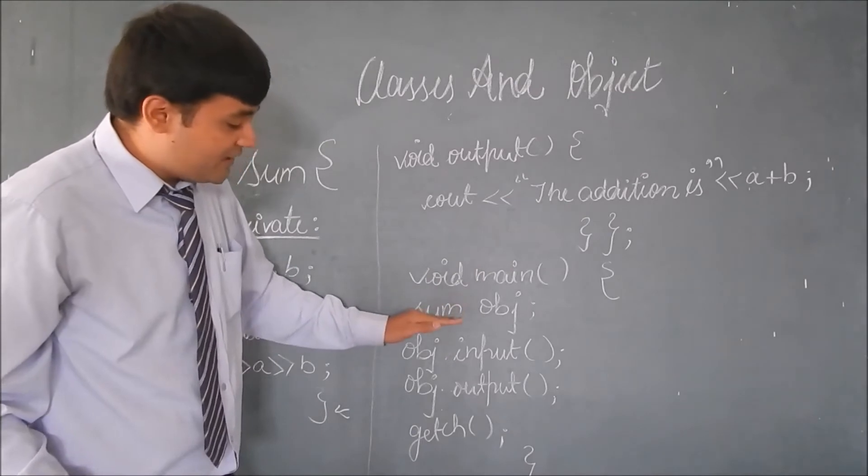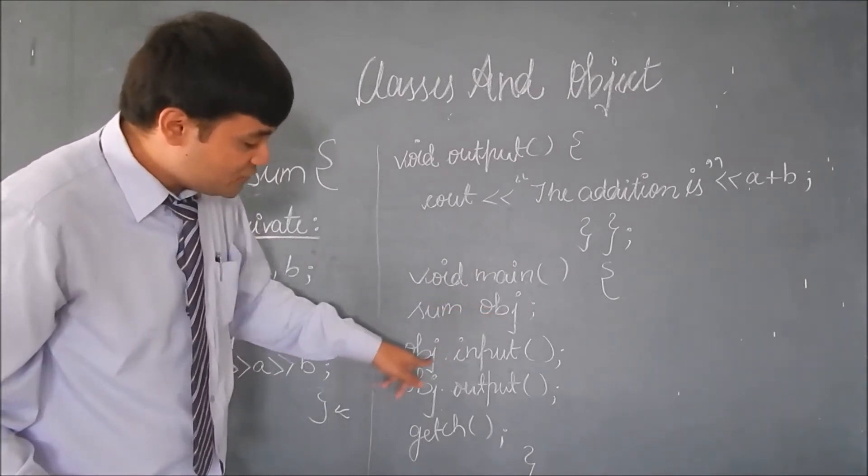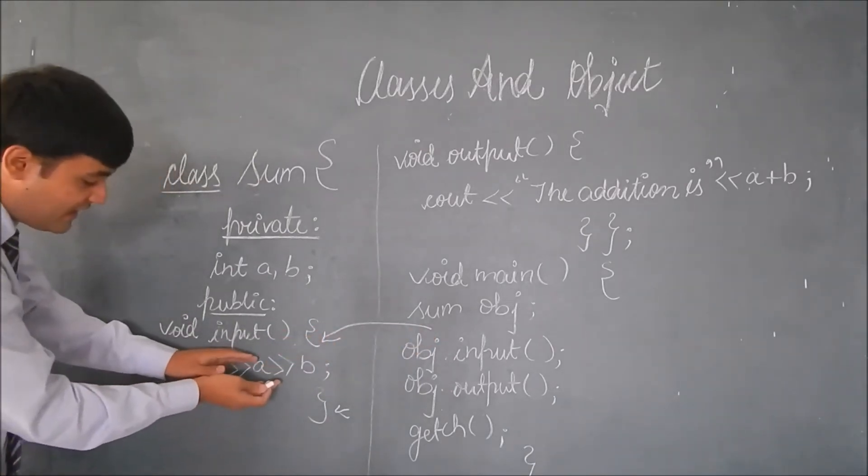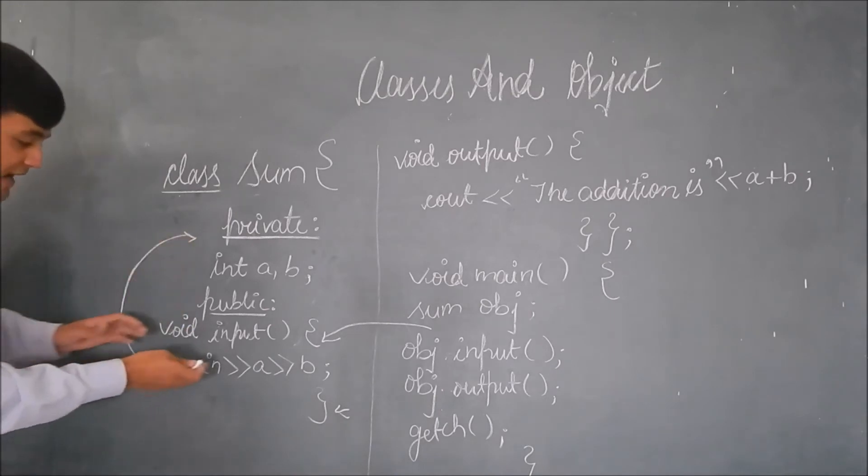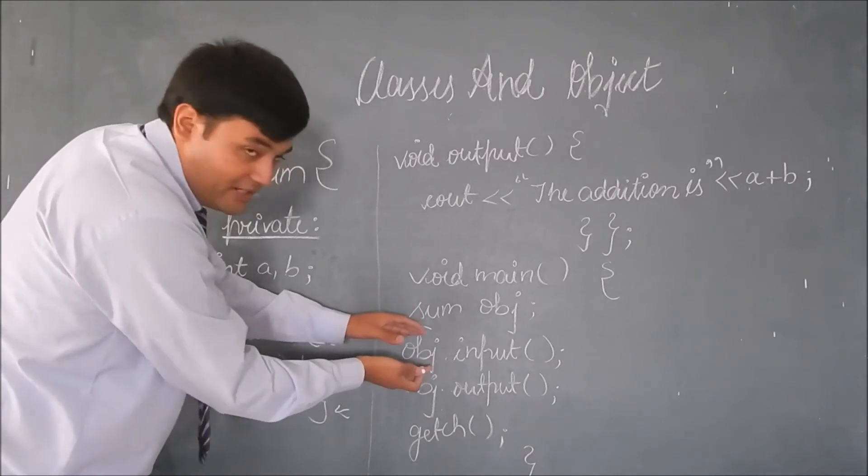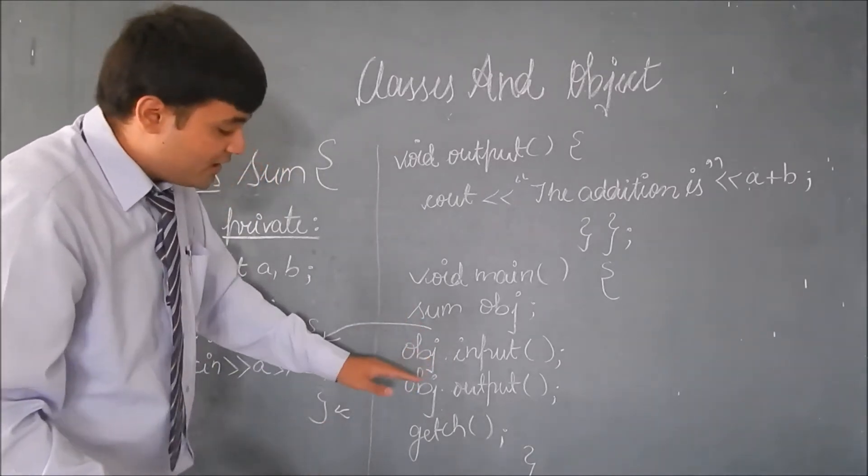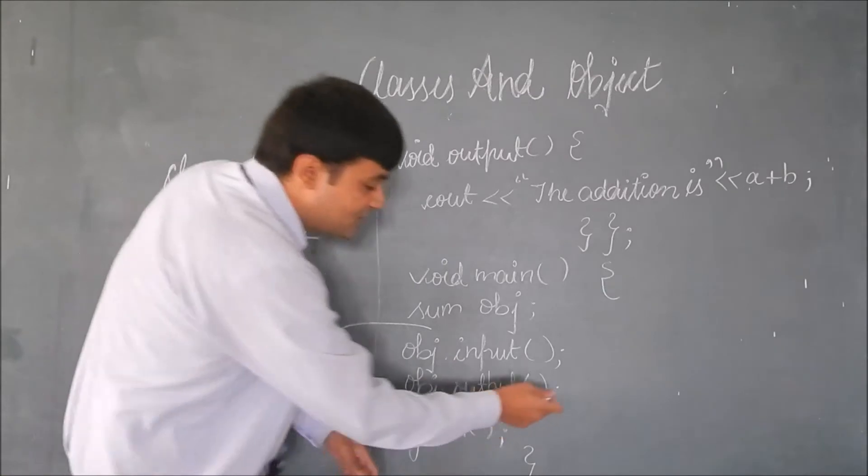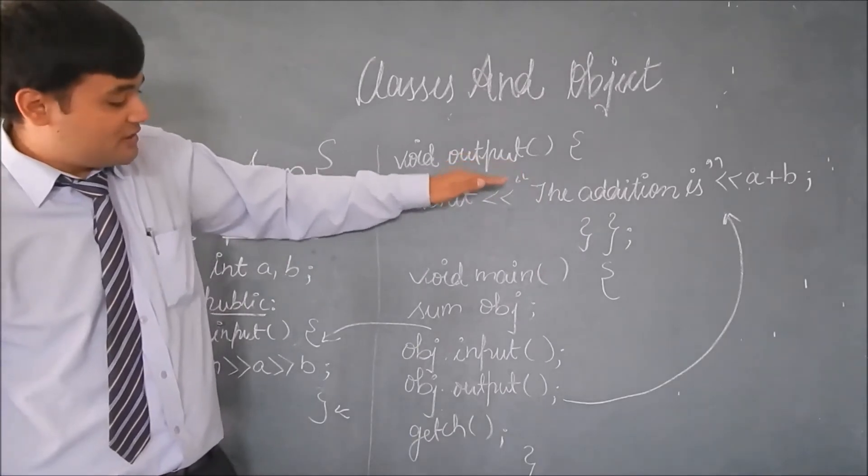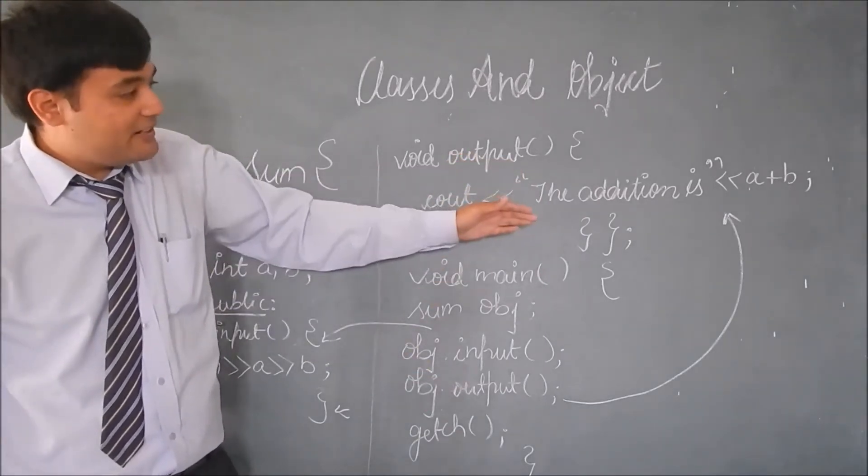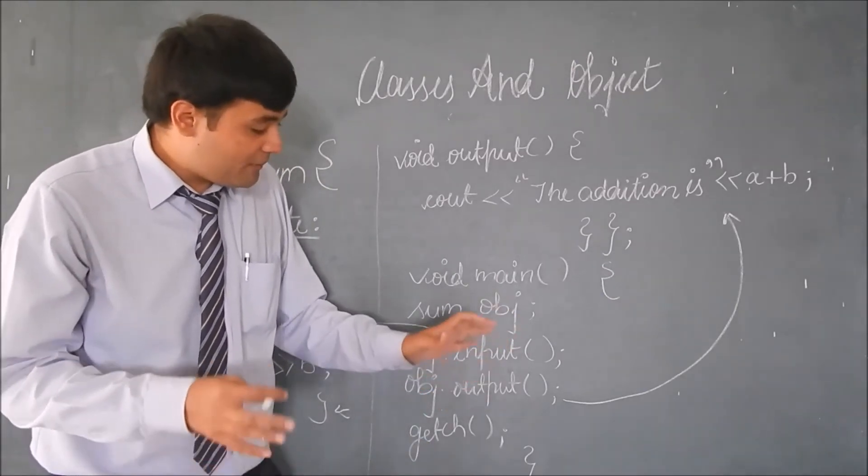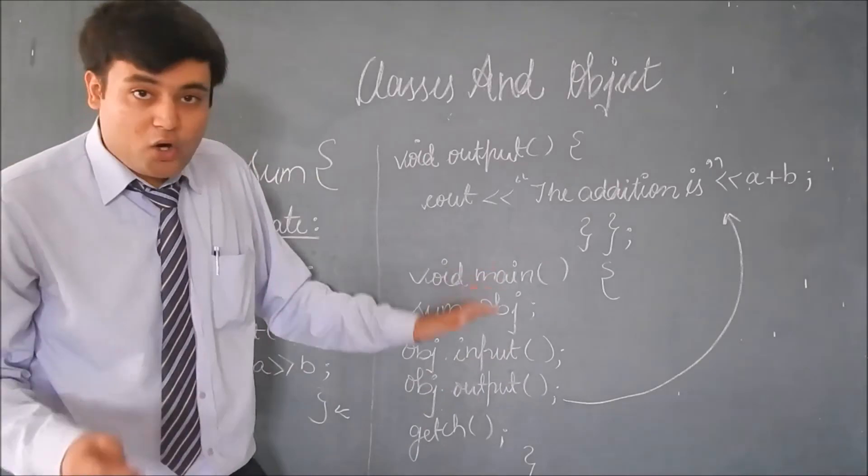We create an object, some object. The object is calling the input function from here. This A and B are called and inputted into this object. This entity is done here. Now, this object function calls the output. This output function in this object returns the addition. The program is done. It was a basic program on how to add two entities using objects and classes.